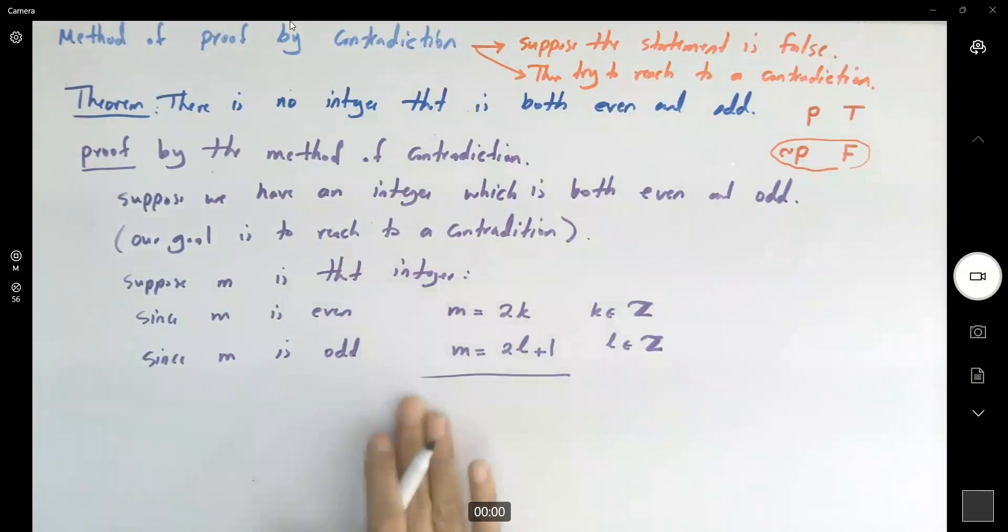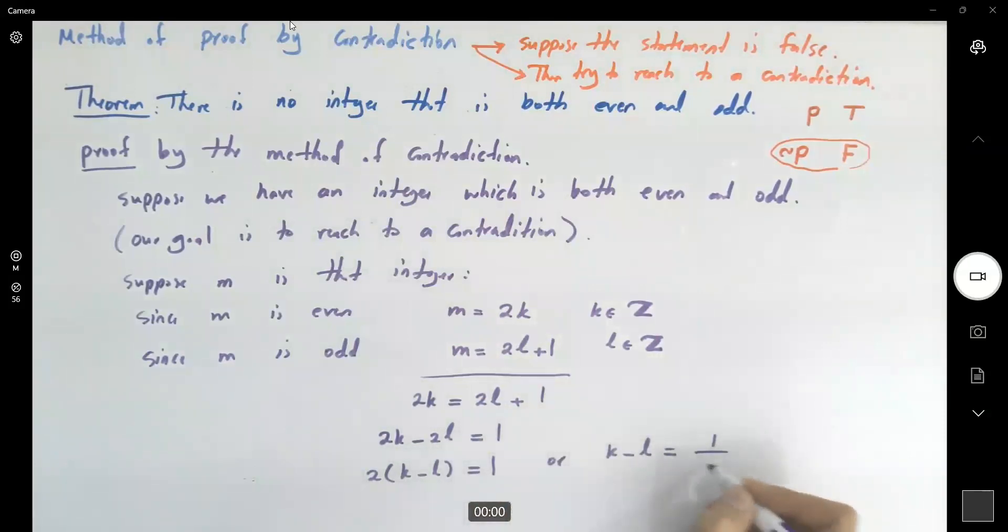So 2K is equal to 2L plus 1 because M is equal to M. We set these two equal to each other. So 2K minus 2L is 1. Factor two parentheses, K minus L is 1. Or K minus L is a half.